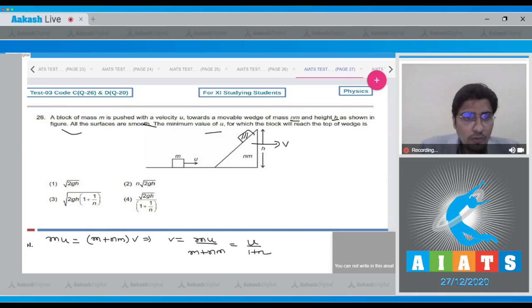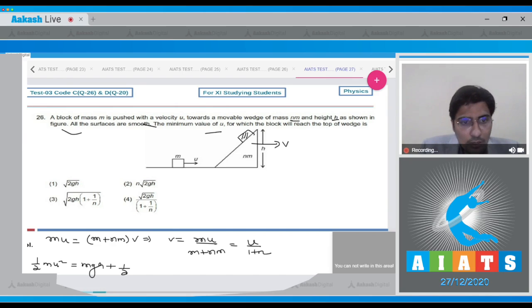Now, using the conservation of energy, we can write down that half mu square is equal to mgh plus half m times 1 plus n, that is the total mass, multiplied by v square.